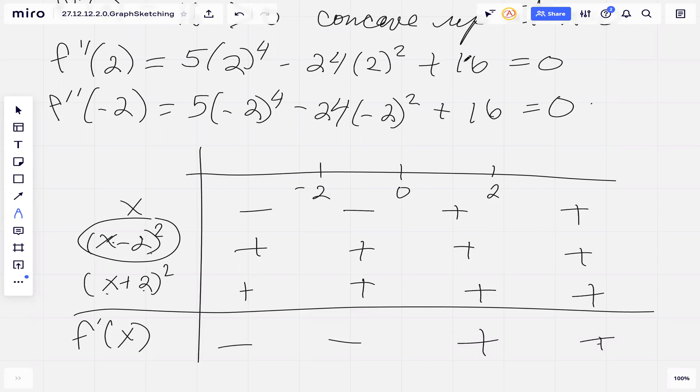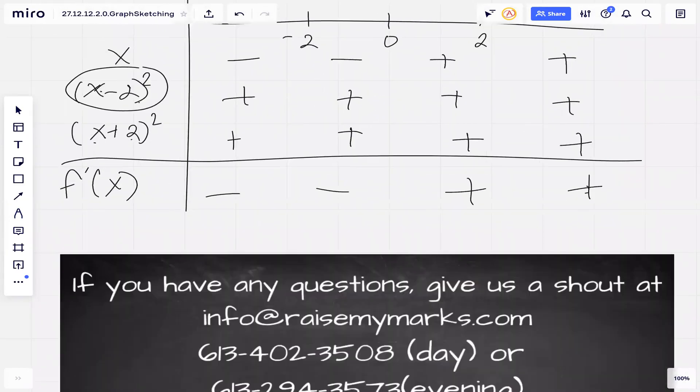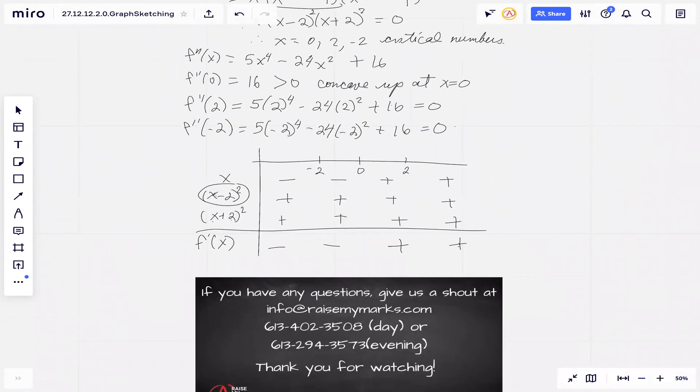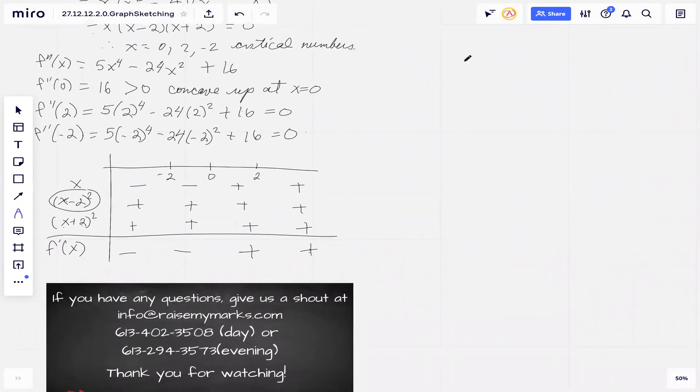We've established that at x equals zero, it looks like we have a minimum. So let's see if we can sketch. Let's draw axes. We have x equals zero, x equals negative two, and when x is two.